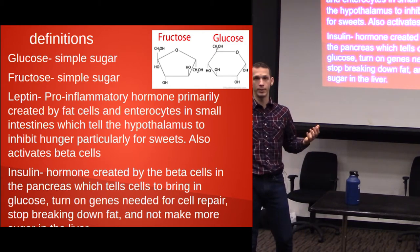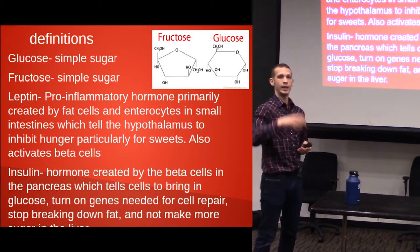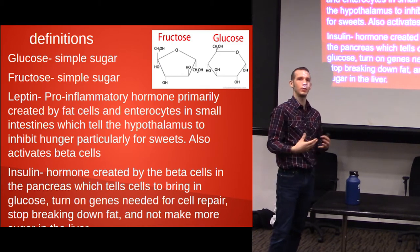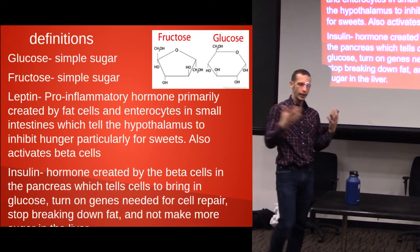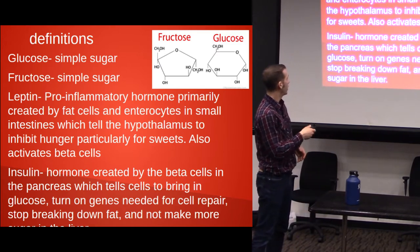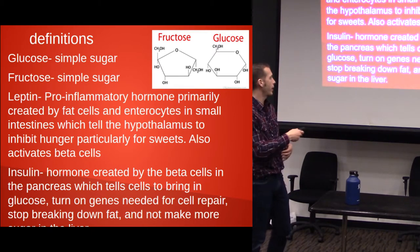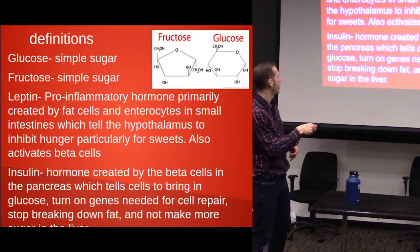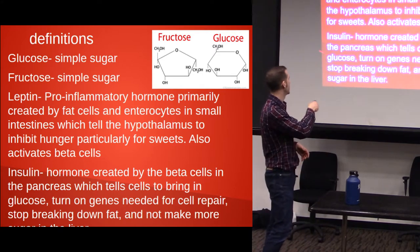Insulin is a hormone created by the beta cells in the pancreas. What insulin does is it tells the body that there's sugar available and to take it in. It's also called an anabolic hormone — it triggers the body to go into building up, cell repair. It stops breaking down fats and does not make more sugar in the liver — in other words, it tells the liver to stop producing sugar.